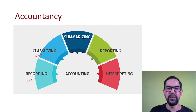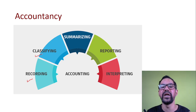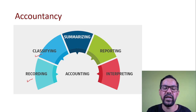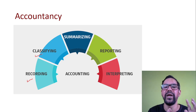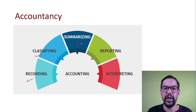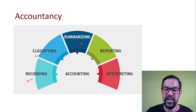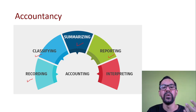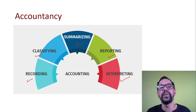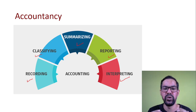Then we classify that data. In a company we have a number of transactions, so we classify those transactions into different heads — a process generally known as bookkeeping or the ledger process. We have different ledgers, like for raw material, employee salaries, and number of accounts — proper classification for each individual item. Then we summarize that data through a trial balance, determining overall income and overall expenditures, and then we prepare reports generally known as company accounts.